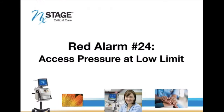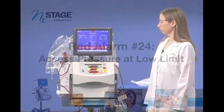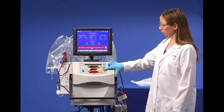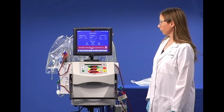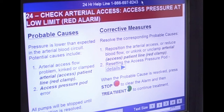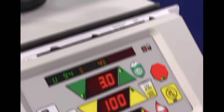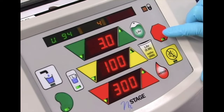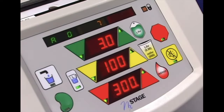Let's review red alarm number 24: access pressure at low limit. When the alarm sounds, note the condition bar for the type of alarm. Press Mute to silence the audible alarm. Click on More Info on the OneView status bar. This alarm is identifying a flow problem from the patient's vascular access. Follow your hospital's protocol for troubleshooting vascular access. Once the problem has been resolved, push the Stop key. Pressing the Stop key after an alarm lets the machine know you have corrected the problem and resets the alarm. Next, press the Treatment button to continue therapy and make sure your pumps are turned on.